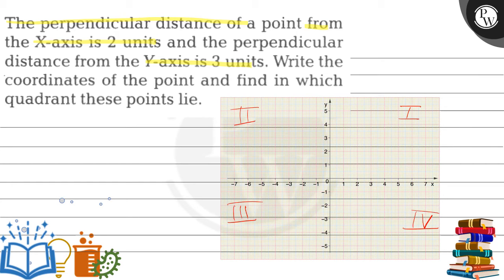Now let's plot these points. The question says that distance from x-axis is 2 units. This is x-axis. Distance from y-axis is 3 units. This is our point here.